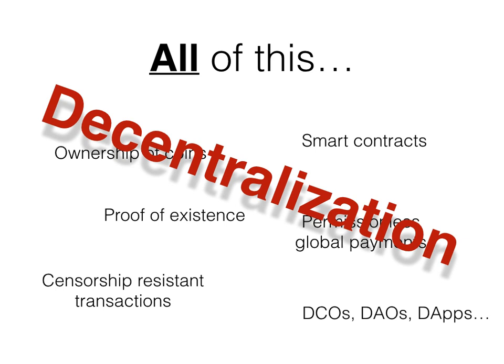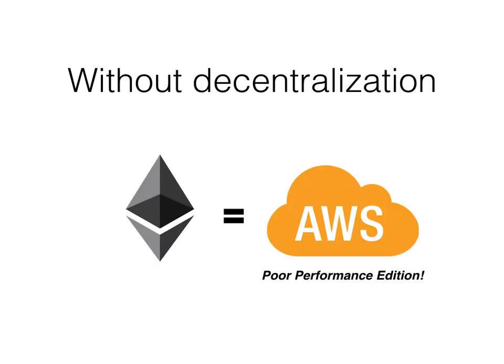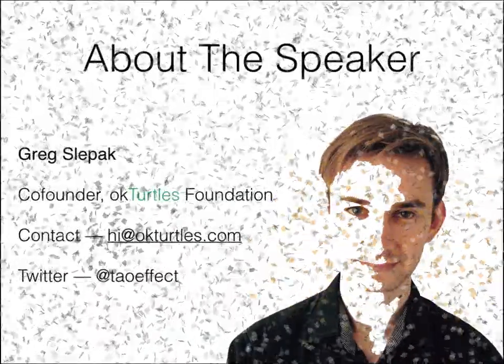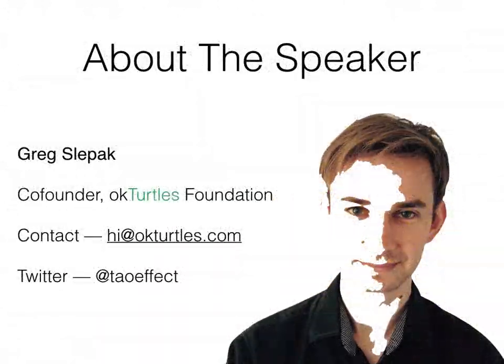A smart contract isn't very useful if its operation can be censored due to a 51% attack — you might as well have written a faster version of it on Amazon Web Services. So remember, without decentralization, Ethereum amounts to an inefficient version of Amazon Web Services. Thank you so much for having me today. Here's my contact information if you want to get in touch. Please enjoy the rest of DEF CON.